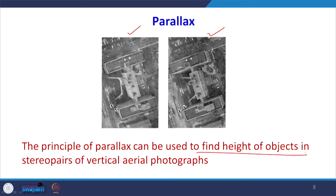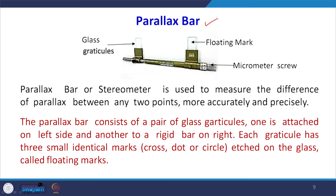We can determine the height of objects in a stereo pair of vertical aerial photographs by applying the principle of parallax — comparing the same objects in the left and right photographs. To measure parallax, we use a very popular device called the parallax bar, also known as a stereometer, which takes measurements between two points on a stereo pair.